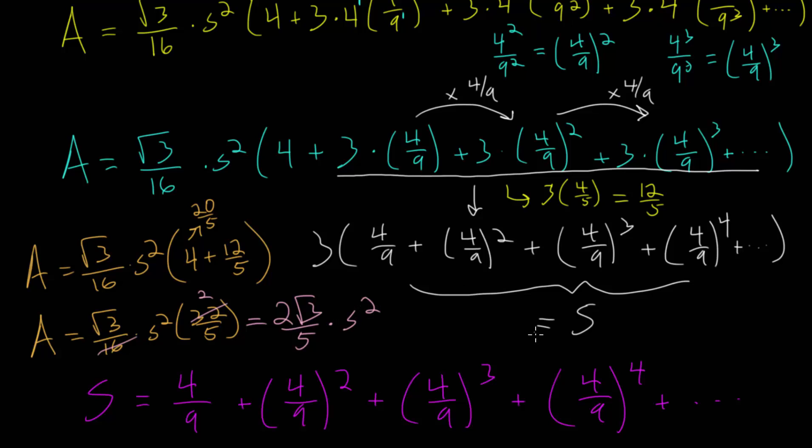This is all multiplied by s squared. And this is the formula for finding the area of the Koch snowflake when we know the original side length of an equilateral triangle.